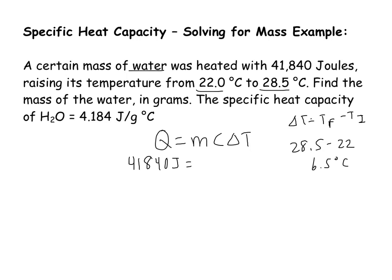I am solving for mass. My specific heat is 4.18. My delta t, like I just found, is 6.5. So if I solve for mass and I work out the math, I should get 1,538 grams.